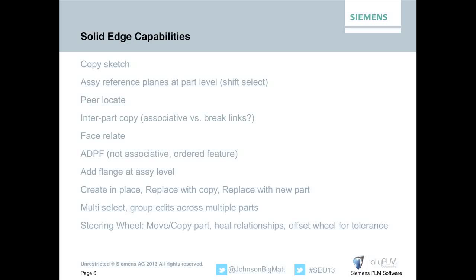Some of them we'll show today, some we won't, but you can use sketches. A top-down design approach is usually started with some sort of master layout sketch - an overall spatial zoning of your assemblies and sub-components. You can take that top-level assembly sketch and copy parts or all of it into part files. Those can be associative back to the assembly, or you can break those links. Another capability is using assembly reference planes at the part level, which is really helpful for plastic or cast parts with drafted faces.